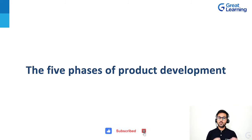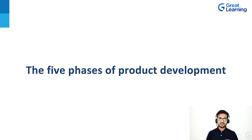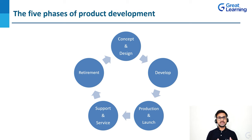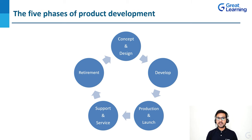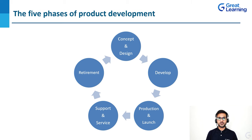Now that we have understood product life cycle management, let's discuss the five phases of product development. The first phase is concept and design. Then comes the development phase where the product is actually developed. Then the product will be introduced into the market and distributed to different stakeholders and customers. Then support and service. And finally, the retirement of the particular product — that is the withdrawal of the product from the market. Let's talk about each of these five stages in much more detail.